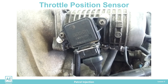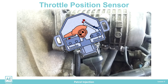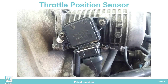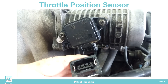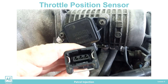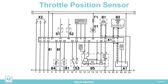The engine control unit receives data on the current engine operating mode from the throttle switch sensor based on monitoring the throttle position. The two switches send three different combinations of signals that define the throttle position for three engine load states.